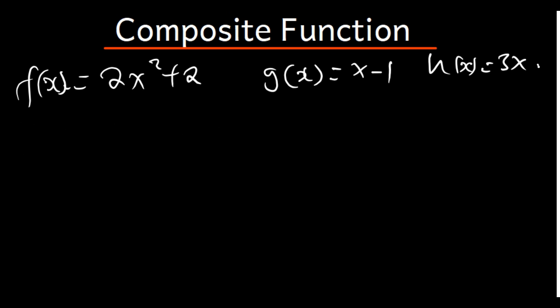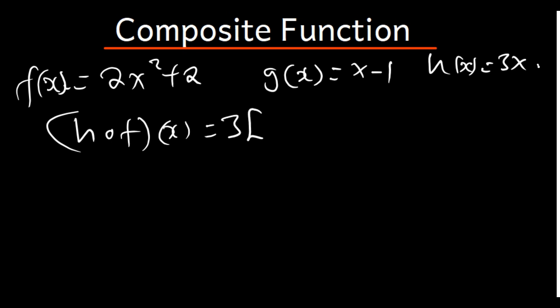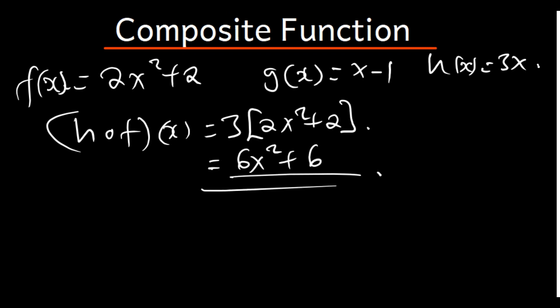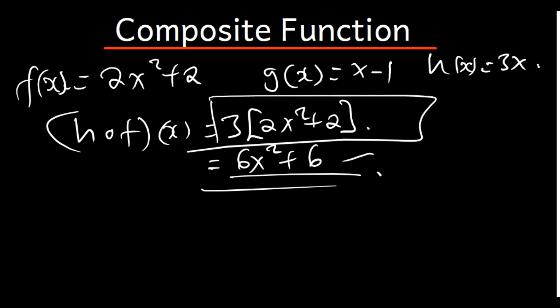What if we are given h of f of x? In the function h, where there is x, we put f. So we have 3 times the function f, which is 2x² + 2. We can simplify this by expanding: it's going to be 6x² + 6. You can leave the answer as 3(2x² + 2) or expand to 6x² + 6.